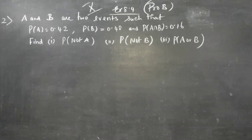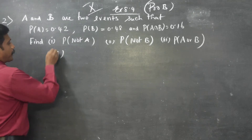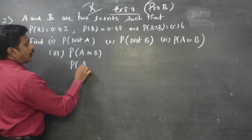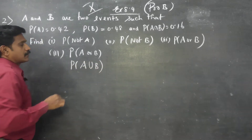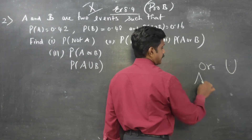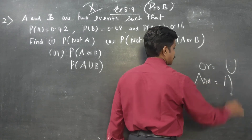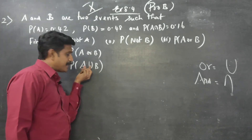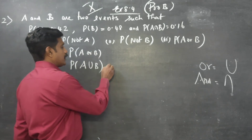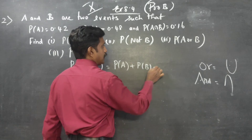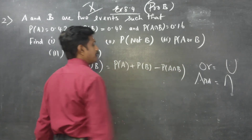The last question is probability of A or B. What is the meaning of 'or'? 'Or' means union. For intersection we use 'and', and for union we use 'or'. So probability of A or B means probability of A union B.